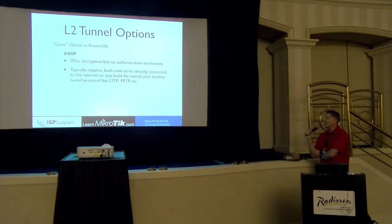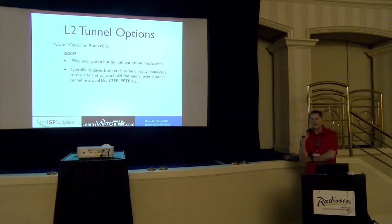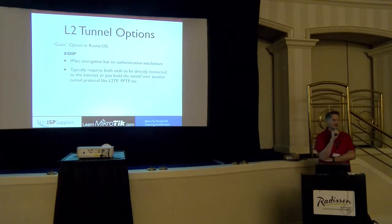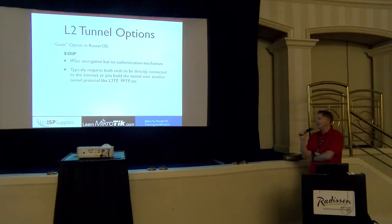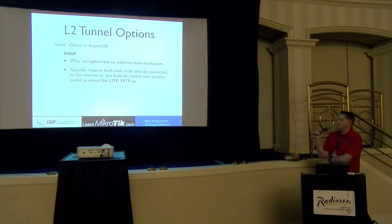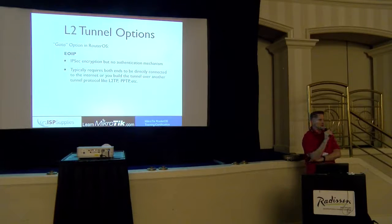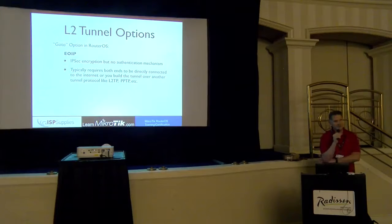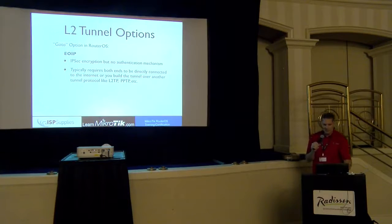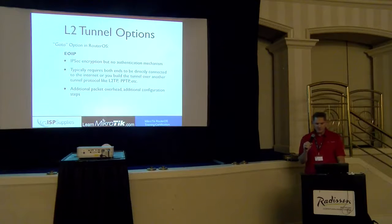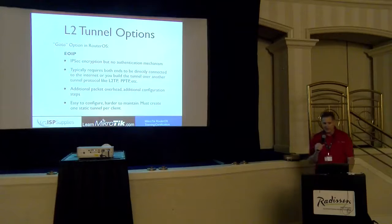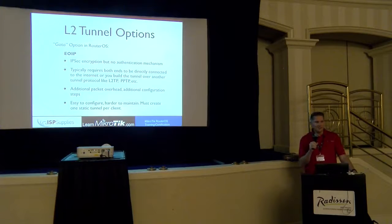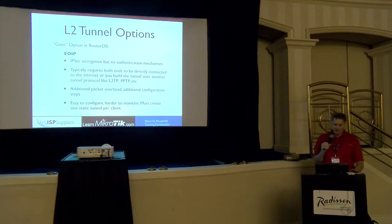The go-to option in RouterOS for me has always been EOIP. A couple of years ago they announced the EOIP tunnel function was 17 years old and they were adding IPsec after 17 years. But it's always been my go-to. Typically, you need both ends with public IPs to establish an EOIP tunnel. Without public IPs, you end up building a tunnel over a tunnel, which gets fairly complex with additional packet overhead, additional configuration steps, and it doesn't lend itself well to road warriors or remote workers changing locations.